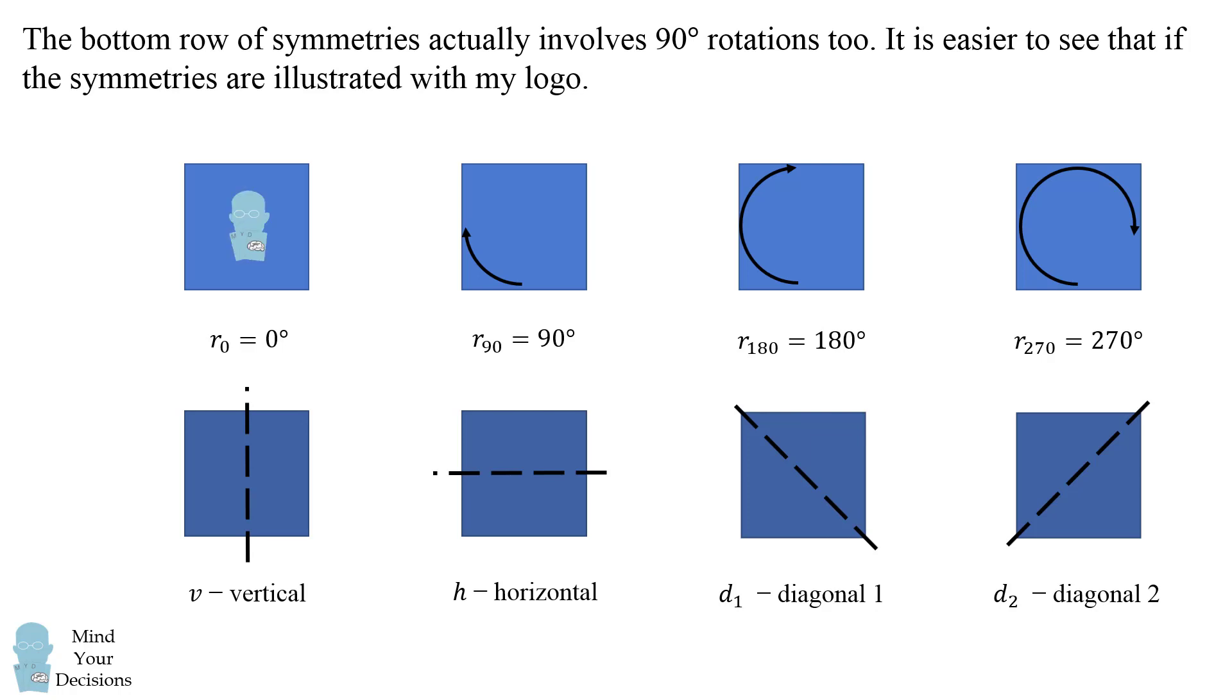So the first symmetry is doing nothing. That'll be my logo. We can then rotate my logo by 90 degrees. We can rotate it by 180 degrees or we can rotate it by 270 degrees.